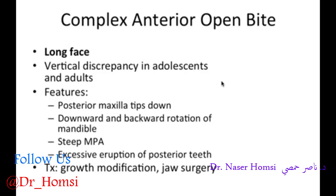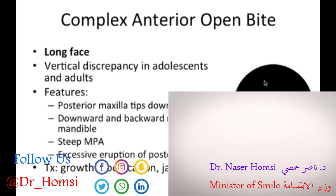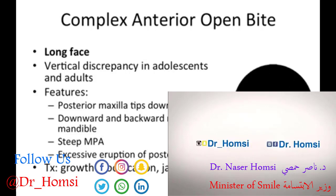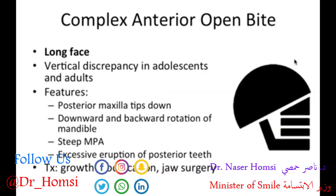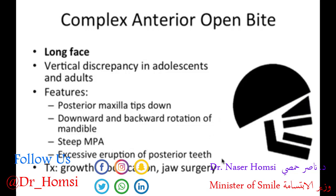Here's a diagram of the craniofacial complex — all five components: the cranium, the cranial base, the maxilla, the maxillary teeth, the mandible, and the mandibular teeth. What happens in this skeletal discrepancy is the posterior maxilla tips down and the mandible rotates downward and backward. You can notice the steep mandibular plane angle, and you get excessive eruption of the posterior teeth, which creates a huge open gap in the anterior region of the mouth. That's our complex anterior open bite.